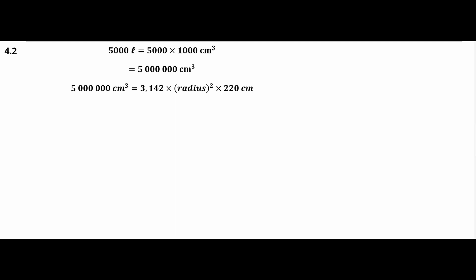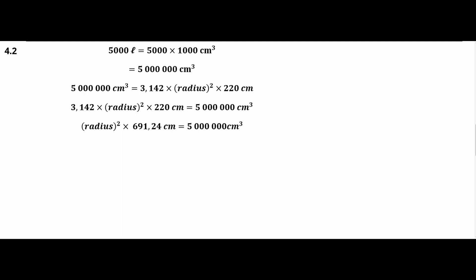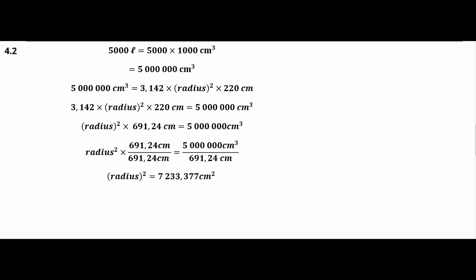Rearranging so that radius is on the left-hand side: 3.142 times radius squared times 220 cm equals 5,000,000 cm³. Simplifying gives radius squared times 691.24 cm equals 5,000,000 cm³. Dividing both sides by 691.24 gives radius squared equals 7,233.377 cm². Finding the square root of both sides gives a radius of 85.049 cm, which rounded to two decimal places is 85.05 centimeters.